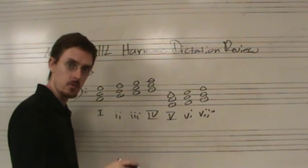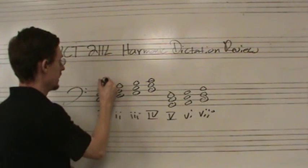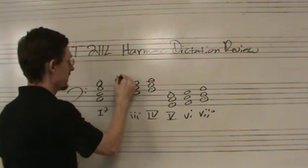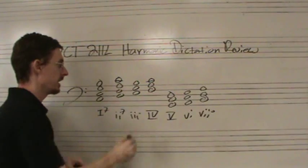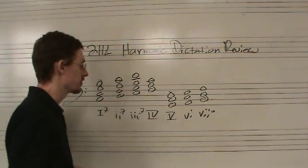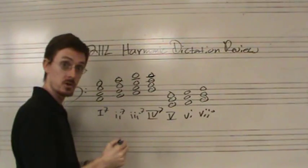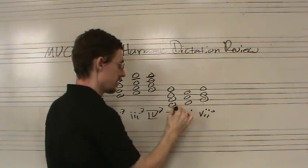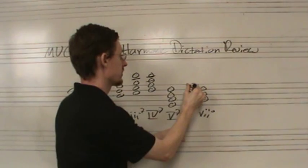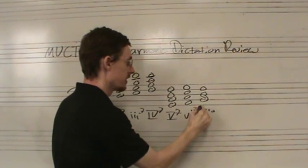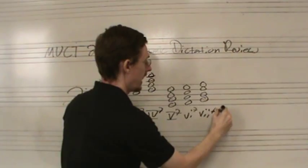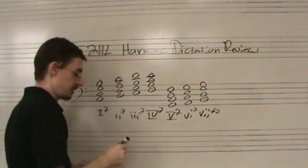Seventh chords in major mode. If we add the seventh, the I7 is a major-major seventh chord. The II7 is a minor-minor seventh chord. The III7 is also a minor-minor seventh chord. The IV7 is major-major. The V chord — what we call the dominant seventh chord — is a major-minor seventh chord. The VI7 is another minor-minor chord. And the VII7 is half-diminished as it is naturally found in the major mode.